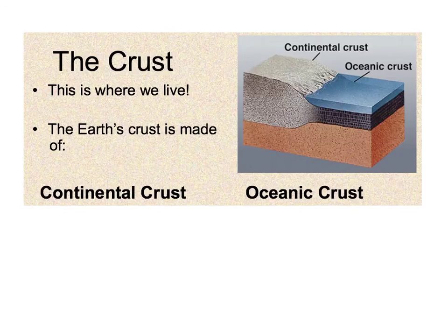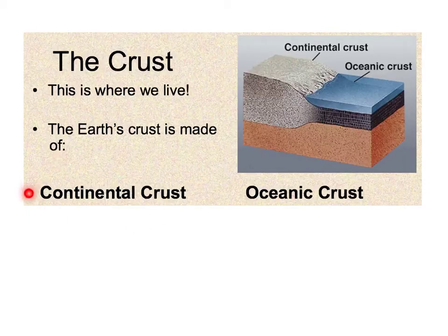The outermost layer, the crust, is Earth's solid and rocky outer layer. This is where we live. The Earth's crust includes both the land surface and the ocean surface, so the Earth's crust is called either the continental crust or the oceanic crust.